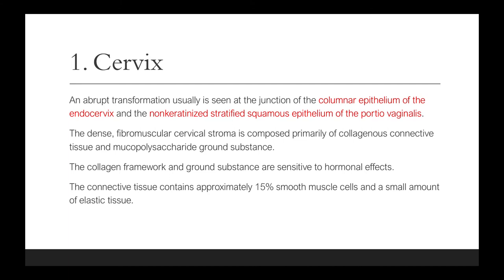An abrupt transformation is usually seen at the junction of the columnar epithelium of the endocervix and the non-keratinized stratified squamous epithelium of the portia vaginalis. The dense fibromuscular cervical stroma is composed primarily of collagenous connective tissue and mucopolysaccharide ground substance. The collagen framework and ground substance are sensitive to hormonal effects. The connective tissue contains approximately 15% smooth muscle cells and a small amount of elastic tissue.